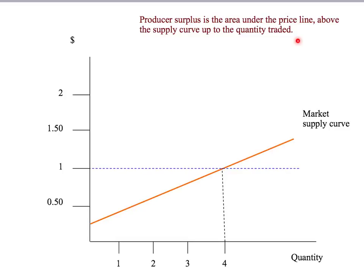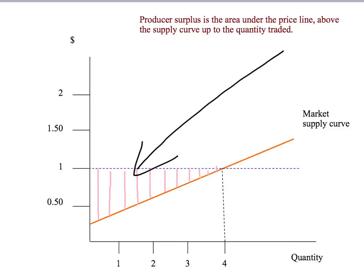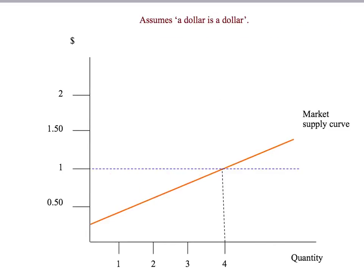For example, if the price of apples is a dollar, and in the market four tons of apples are sold each day, then the producer surplus from that trade in the market is the area under the price line, above the market supply curve, up to the quantity traded. That's simply the pink shaded area on our diagram here.